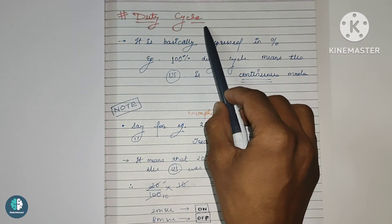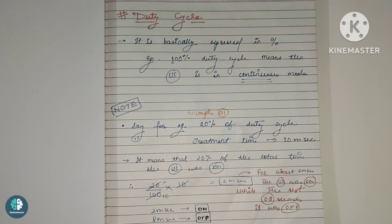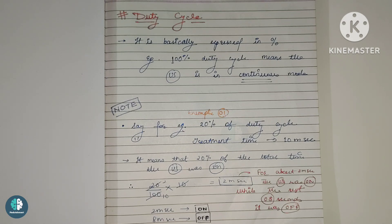So let's discuss the duty cycle, which is the next terminology in the pulsed mode. It is basically expressed in percentage. Earlier we saw the mark space ratio, which is in the form of a ratio, not a percentage. But the duty cycle is expressed in the form of percentage. For example, if the US is having 100% duty cycle, it means the US is in continuous mode of application, because 100% duty cycle means the ultrasound is on for the full treatment time. We can also obtain the mark space ratio from the duty cycle.